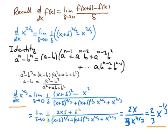That is our result for the derivative of x to the 2 thirds from first principles. The identity we used — suitably rearranged — is a key identity which allows us to differentiate any fractional power, and also any negative fractional power. At this stage, I'll stop this video.